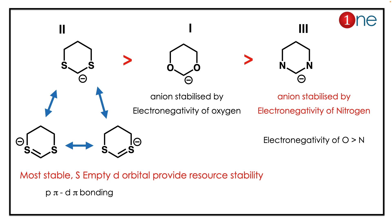So sulfur gives the most stable anion among oxygen and nitrogen. Oxygen is more electron-withdrawing, so oxygen is more stabilizing than nitrogen. The key concept here is that sulfur is always involved in p-d pi bonding, providing extra stability to the anion.